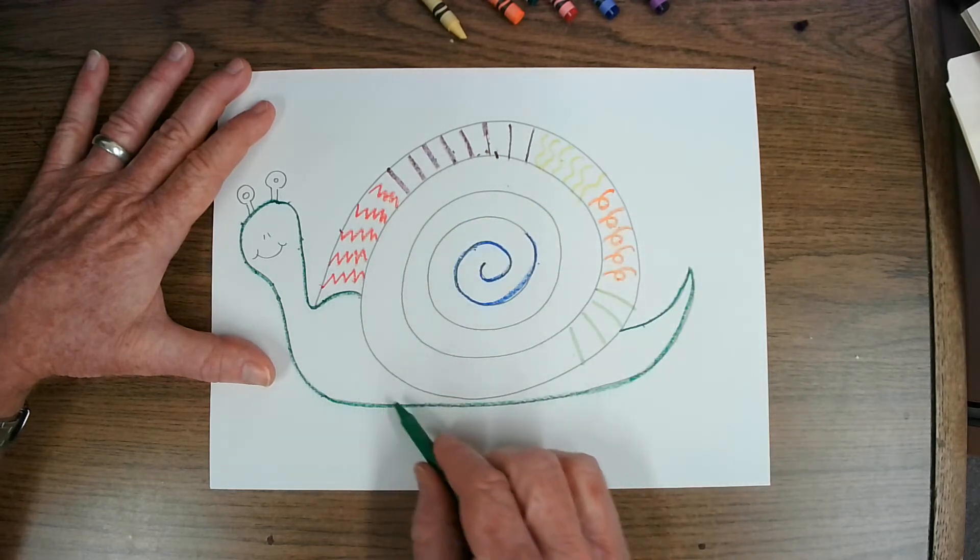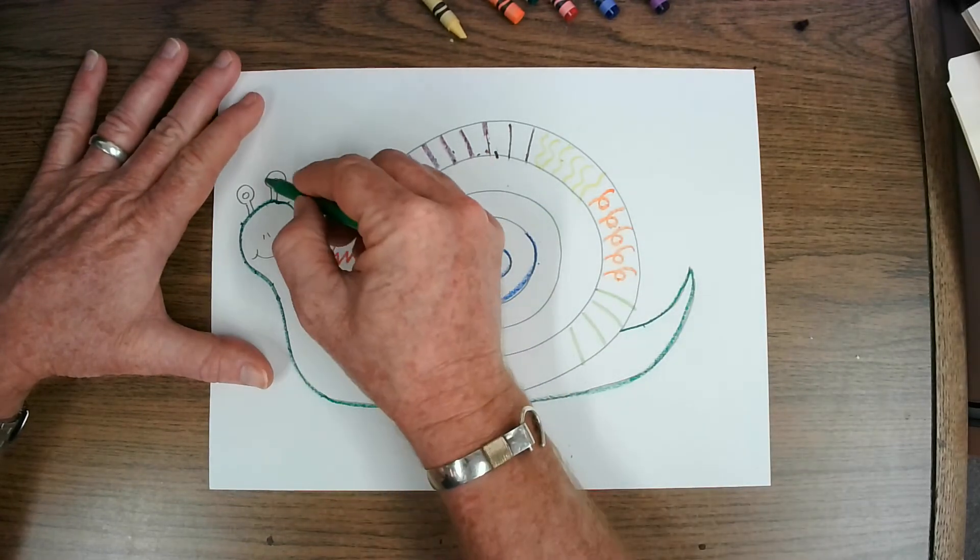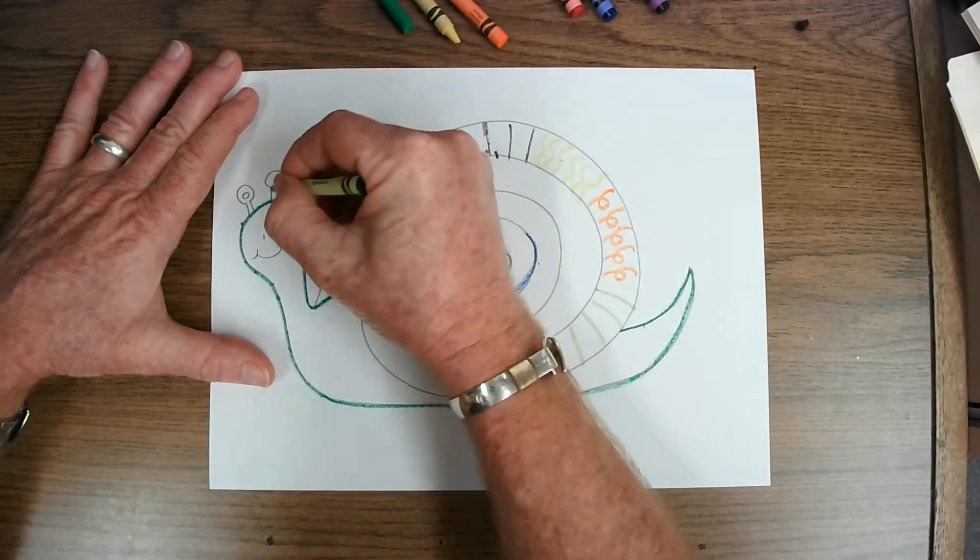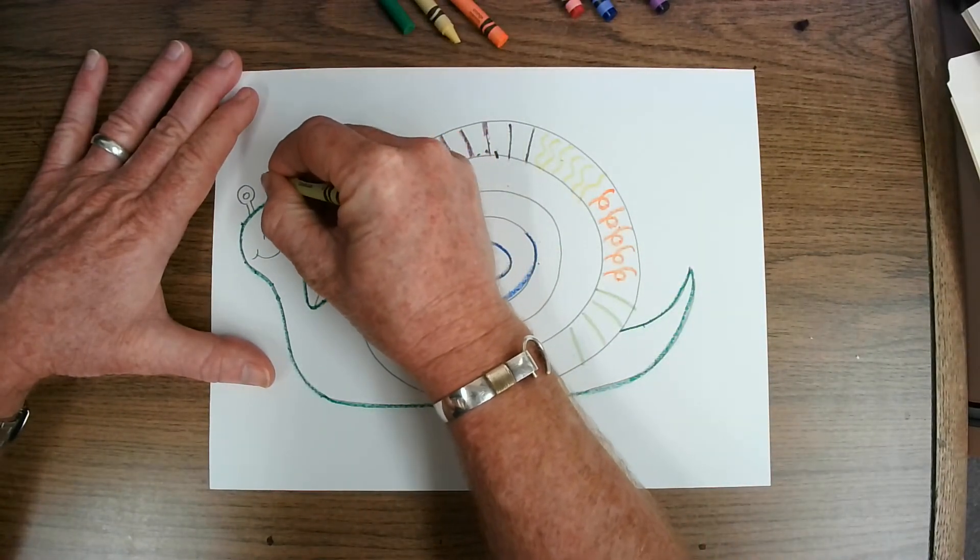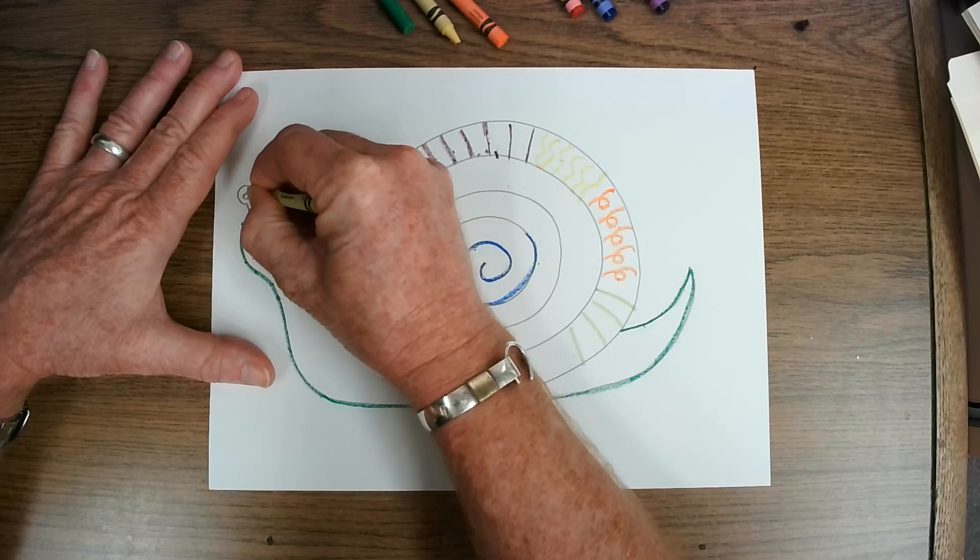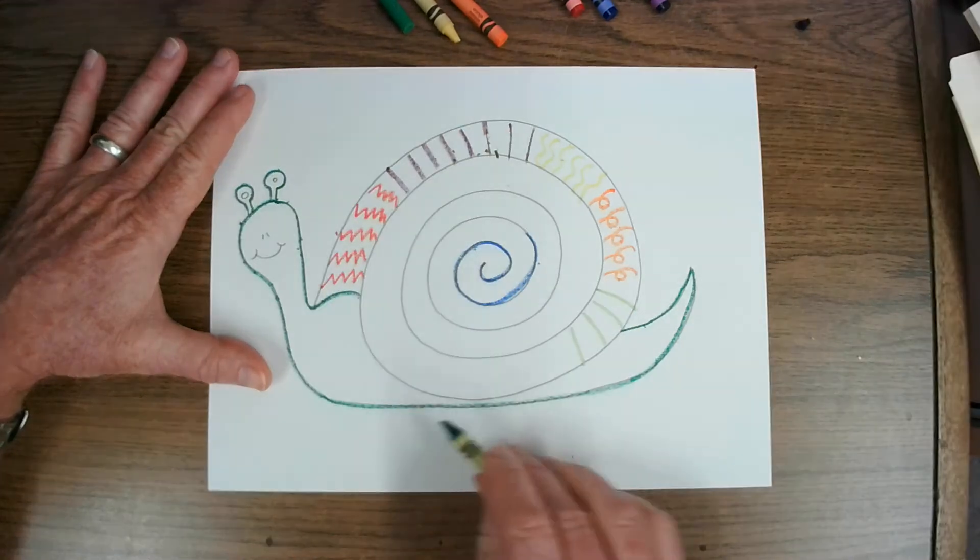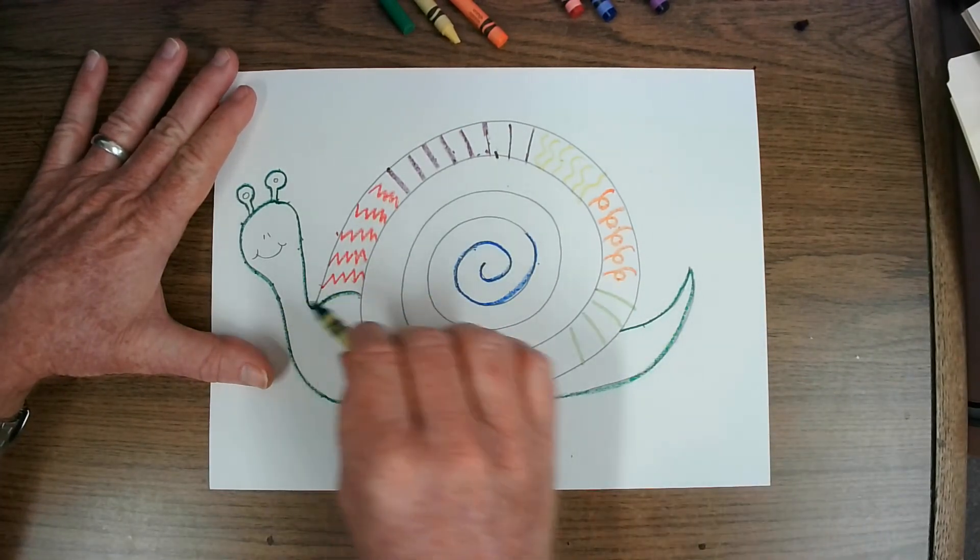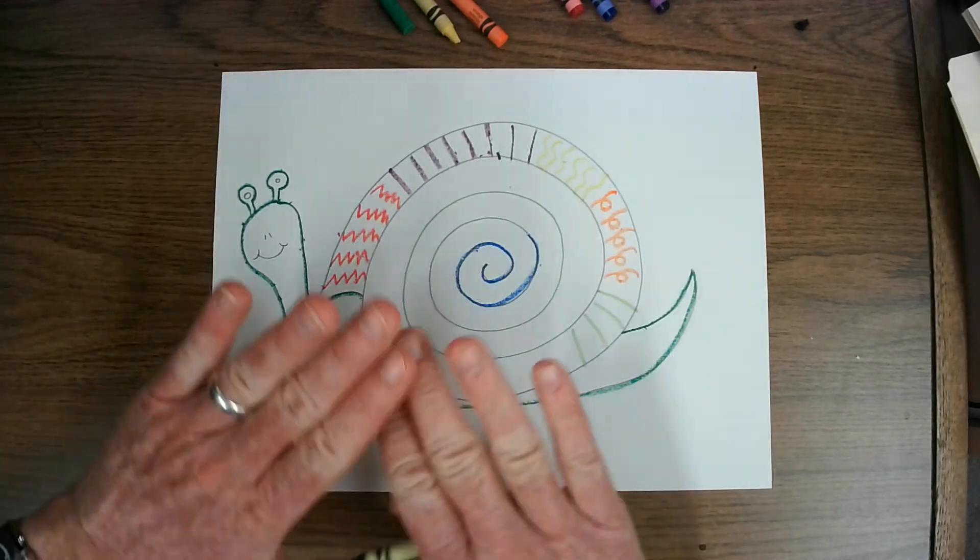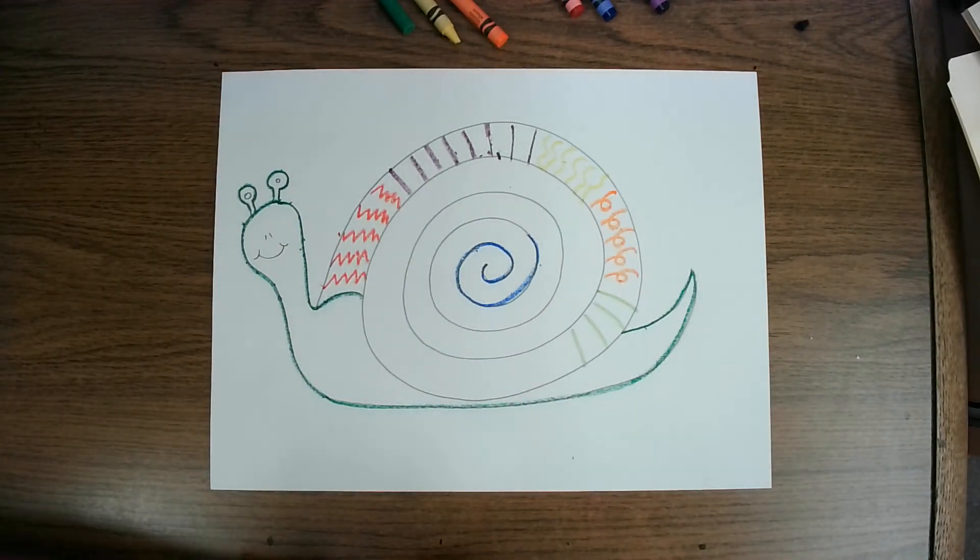And then we can color the snail's body with a solid color. We can outline the eyes. I forgot to do that with my green. And after we get all of our beautiful lines inside the snail's body, and after we get all the colors in the snail's shell, the nice, neat lines, we're going to paint over this entire painting with watercolor paints.